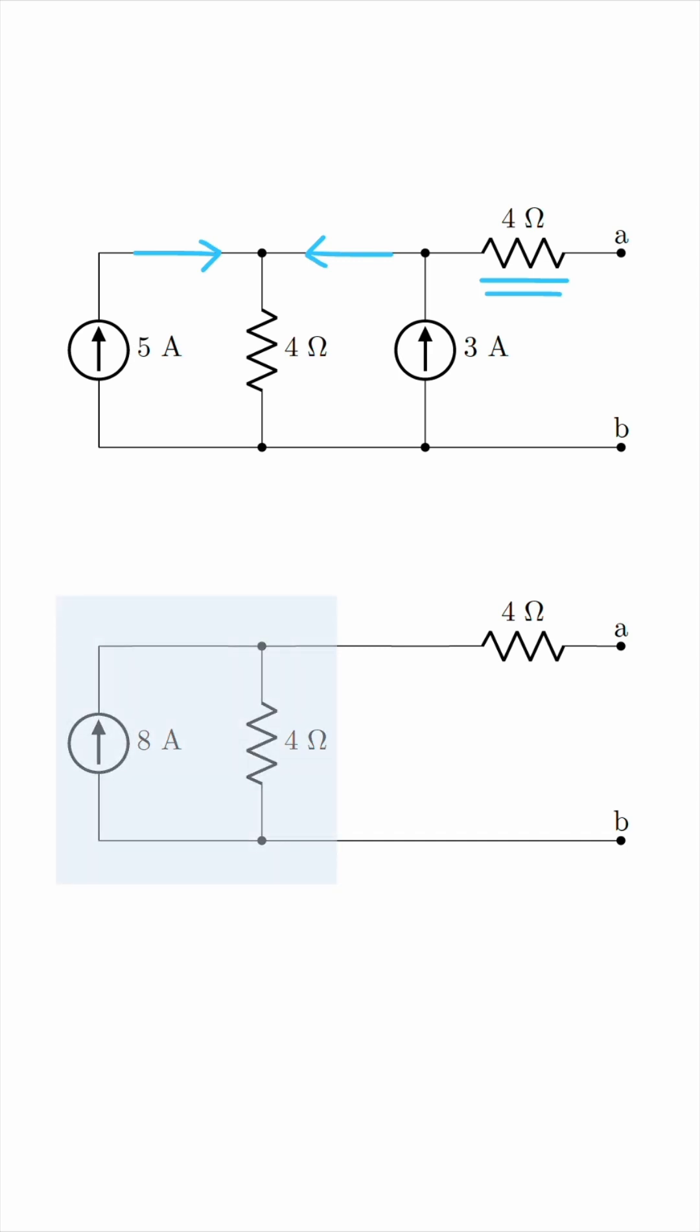And now, we can use source transformation once more, to represent this as a voltage source in series with this 4 Ohm resistor. 8 times 4 is 32 volts.